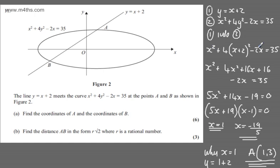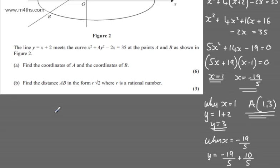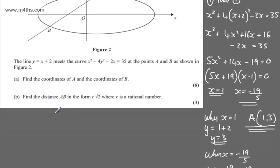You could have eliminated x here, I eliminated y, it's entirely up to you. In part B for three marks, we need to find the distance AB in the form R root 2, where R is a rational number. So all we're using is the distance formula.